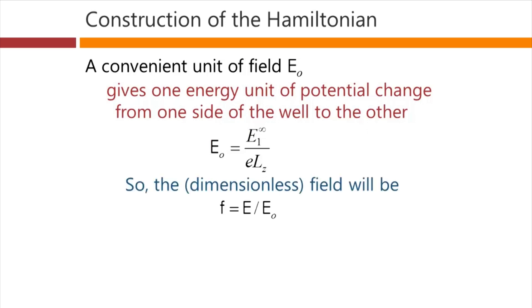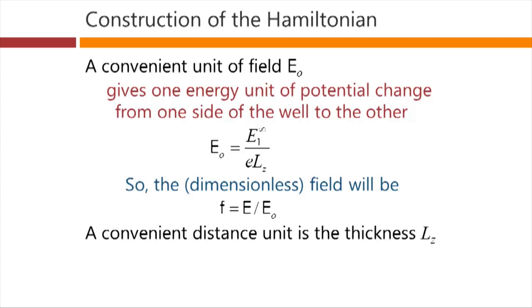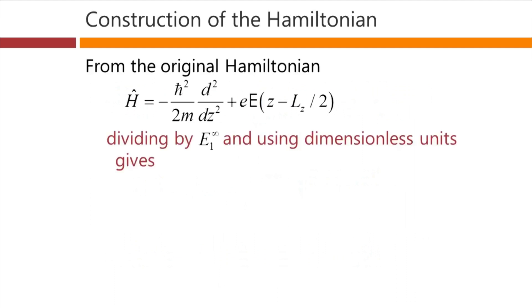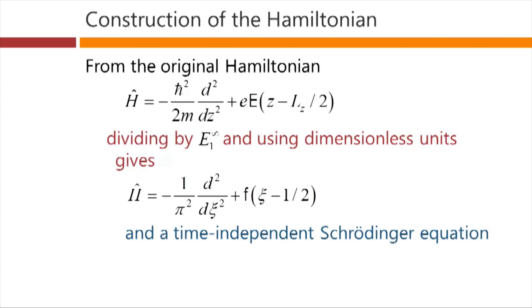So the dimensionless field then will be some number f, which is the actual field divided by this field unit here. And obviously, a convenient distance unit in this problem is the thickness Lz of the well. So the dimensionless distance will be xi, which is z over Lz. From the original Hamiltonian, dividing by this energy unit E1 infinity and using dimensionless units gives this form of the Hamiltonian, now a dimensionless form: 1 over pi squared d2 by dxi squared plus f times xi minus half. And the time-independent Schrodinger equation in these dimensionless units would simply be h operating on phi of xi equals eta, our eigenenergy we hope to calculate, times phi of xi.